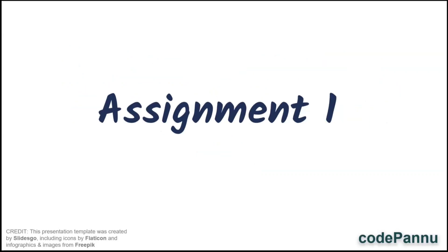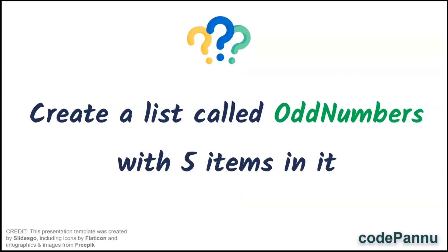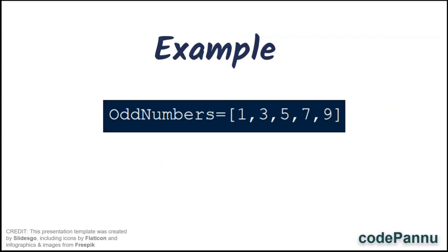First assignment is can you create a list called odd numbers with five items in it? For example odd numbers equal to 1, 3, 5, 7, 9.